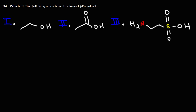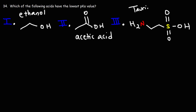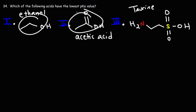Question 34: which of the following acids has the lowest pKa value — this is another way of asking which one is the strongest acid. Compound one is ethanol, compound two is acetic acid which has a carboxylic acid functional group and an alcohol, and compound three is taurine which has an amino group and a sulfonic acid group. Now let's compare these.